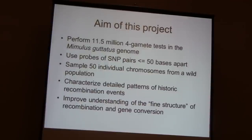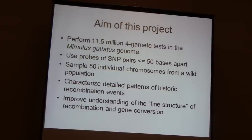The aim of this project is to perform more than eleven million four-gamete tests. I'm using pairs of SNPs that are less than fifty bases apart — very close. For all pairs, I test fifty individual chromosomes in a wild-growing population of monkey flowers. With that, I hope to characterize detailed patterns of historical recombination, as well as shed light on the fine structure of recombination gene conversion.